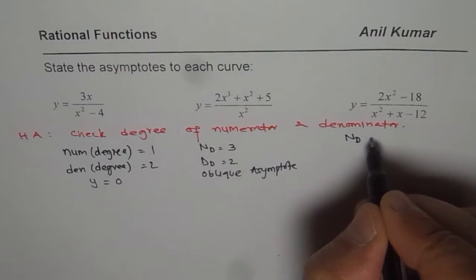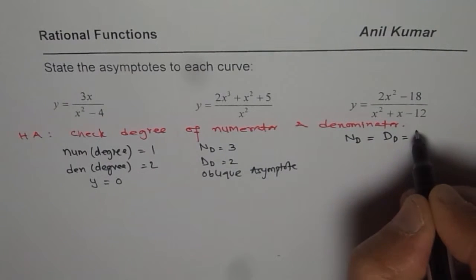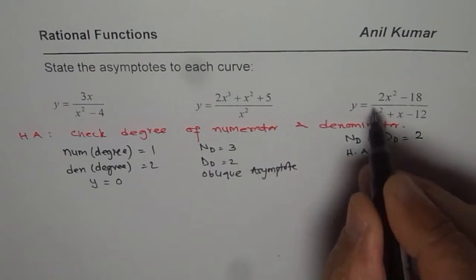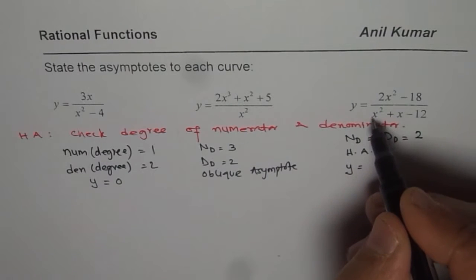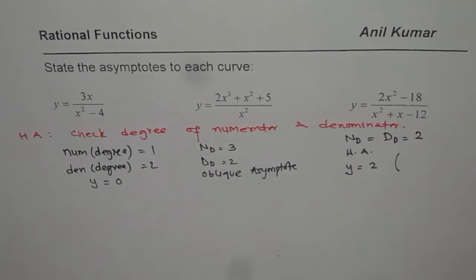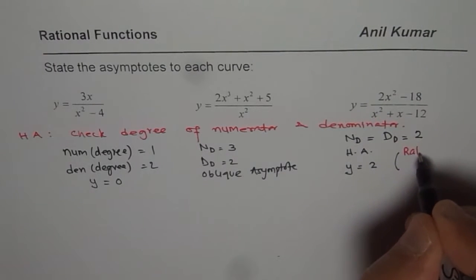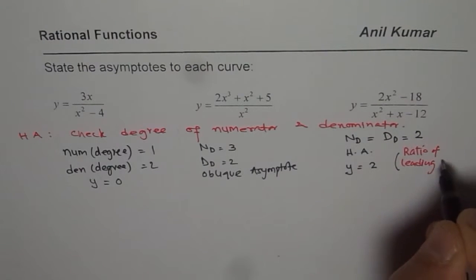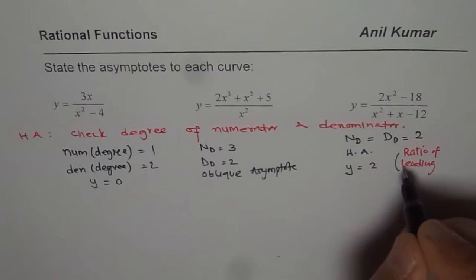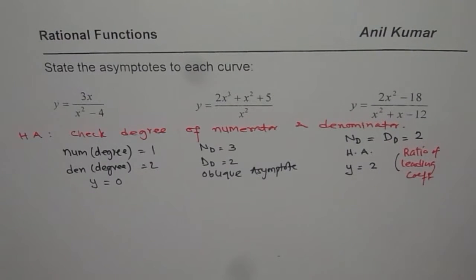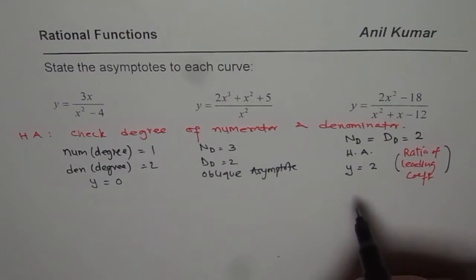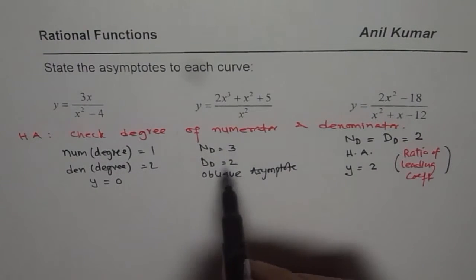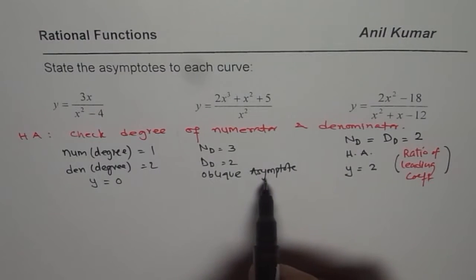For the third function, the numerator degree equals the denominator degree, and both are 2. Whenever that is the case, we have a horizontal asymptote and the equation is y equals to the ratio of leading coefficients, which is 2 over 1, so y equals to 2. So we have horizontal asymptotes for the first and third functions, but not for the second function — it has an oblique asymptote, which we will find later.